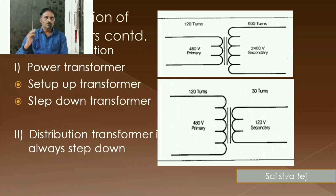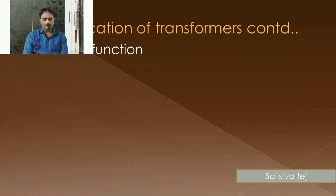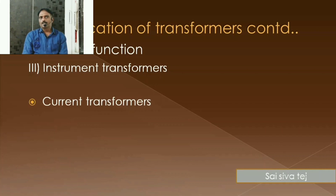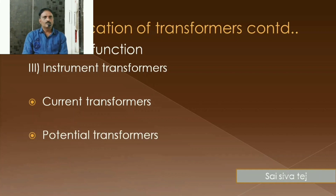The voltage which is going to be transferred will be proportional to the number of turns. And after that, based upon the function, the transformers are going to be classified as instrument transformers and welding transformers. Again, the instrument transformers are being sub-classified as current transformers and potential transformers. Current transformers are mainly used where we are going to measure the large currents in transmission lines. Similarly, the potential transformers are used in order to measure the higher magnitudes of voltages.